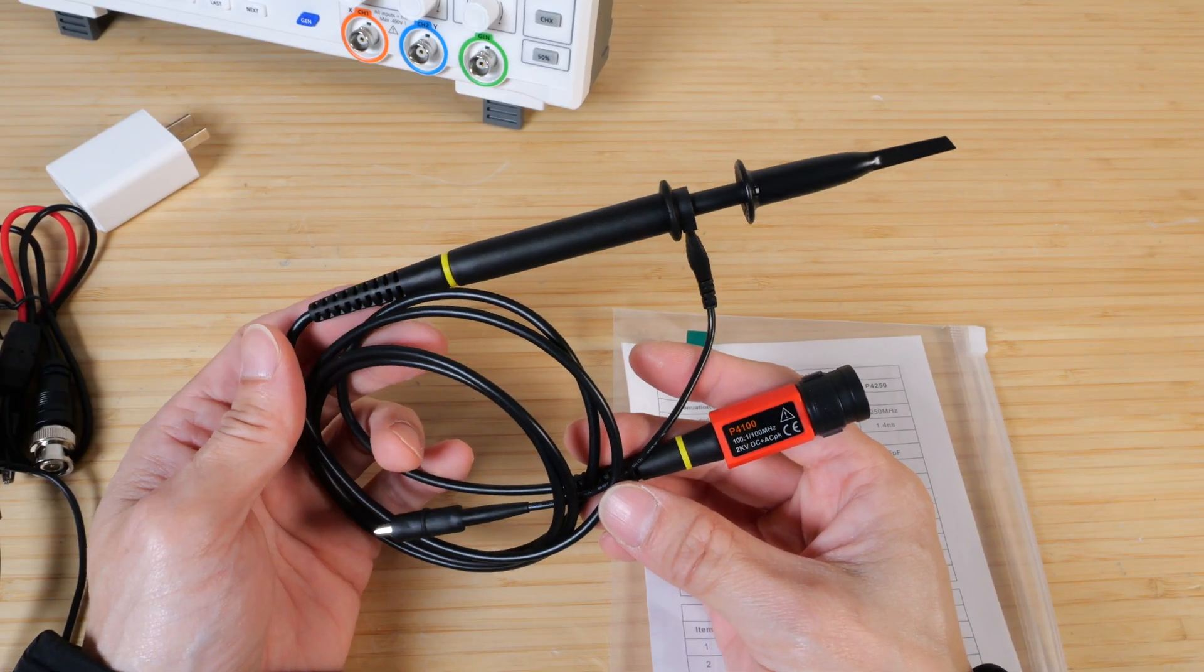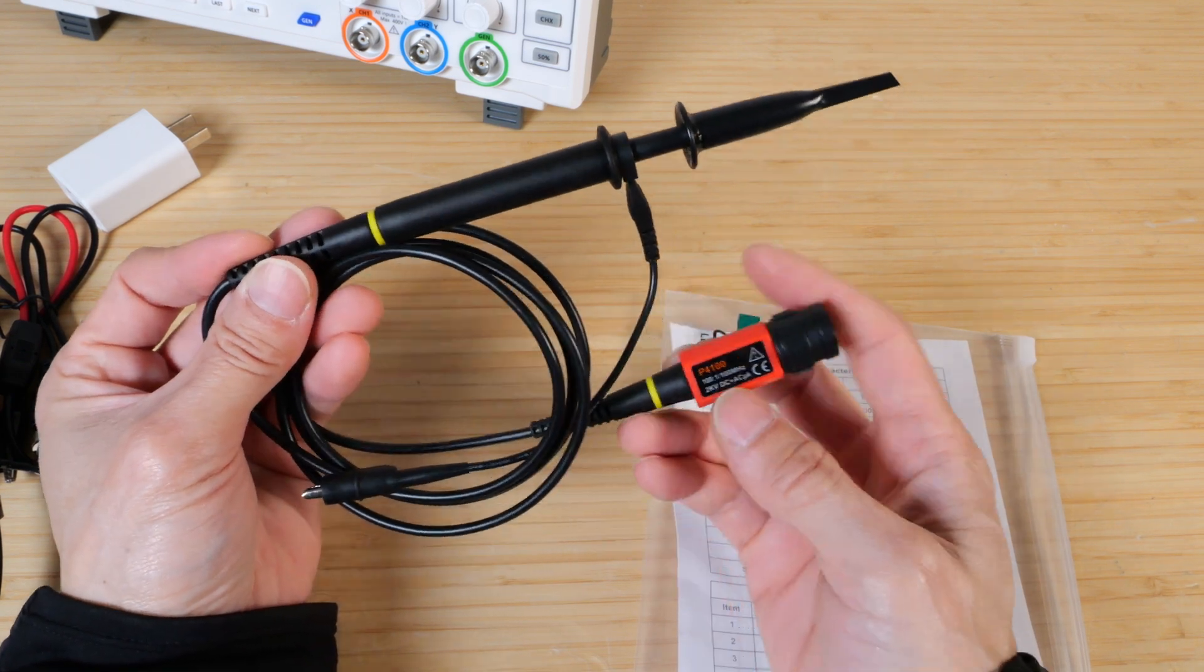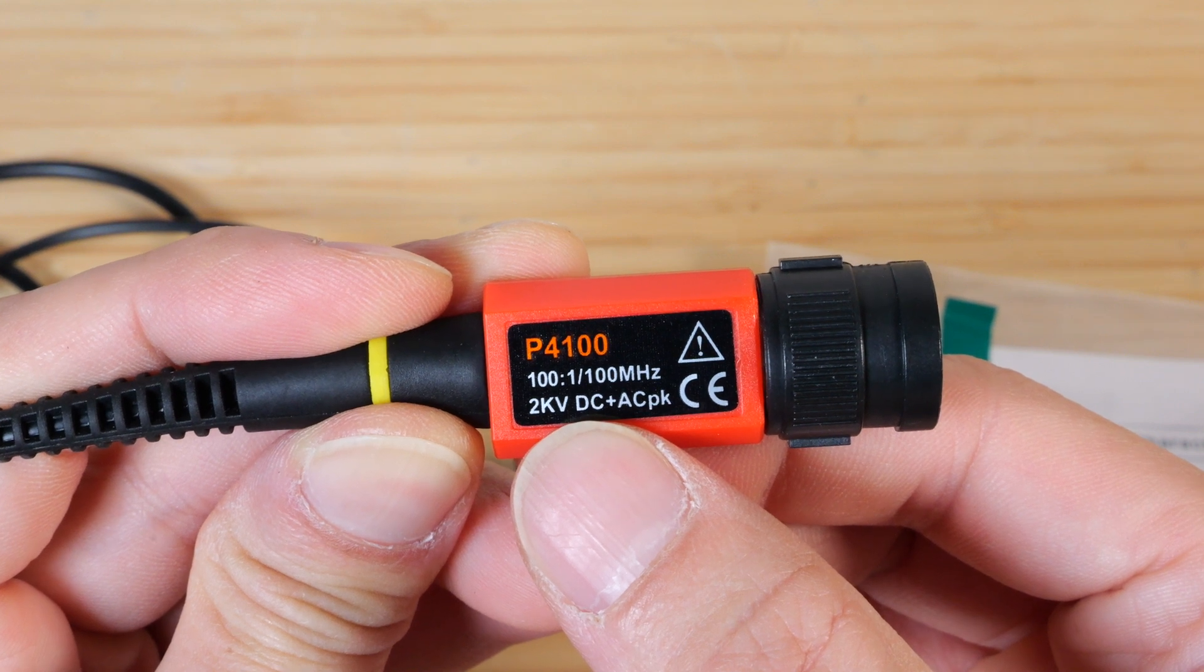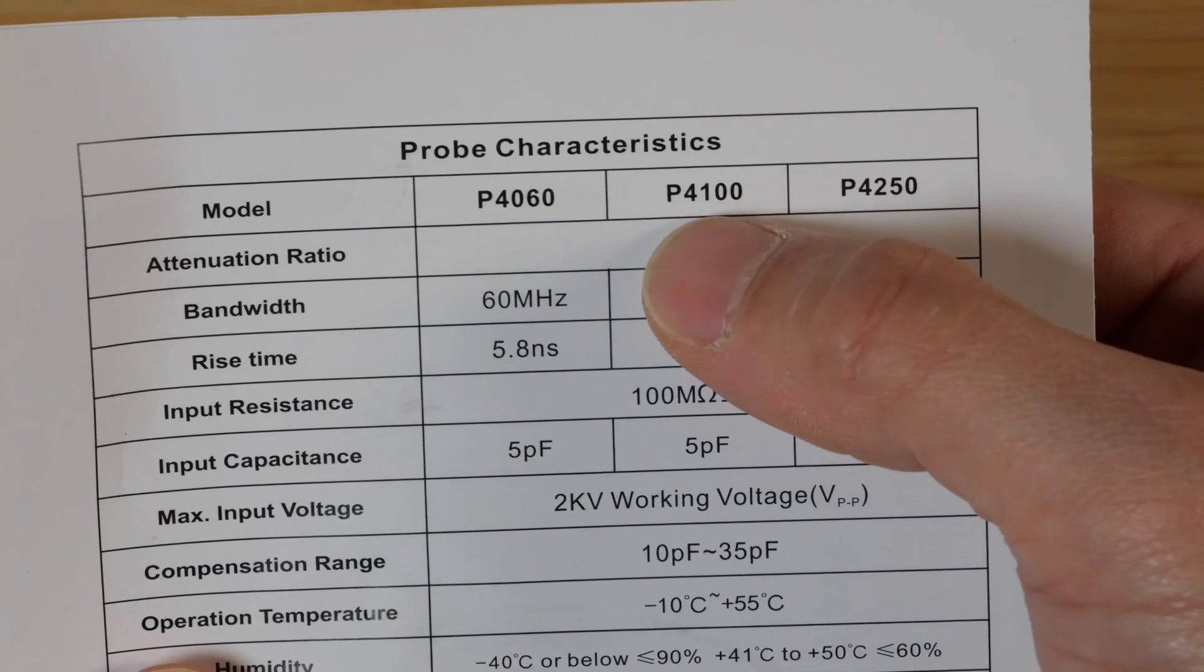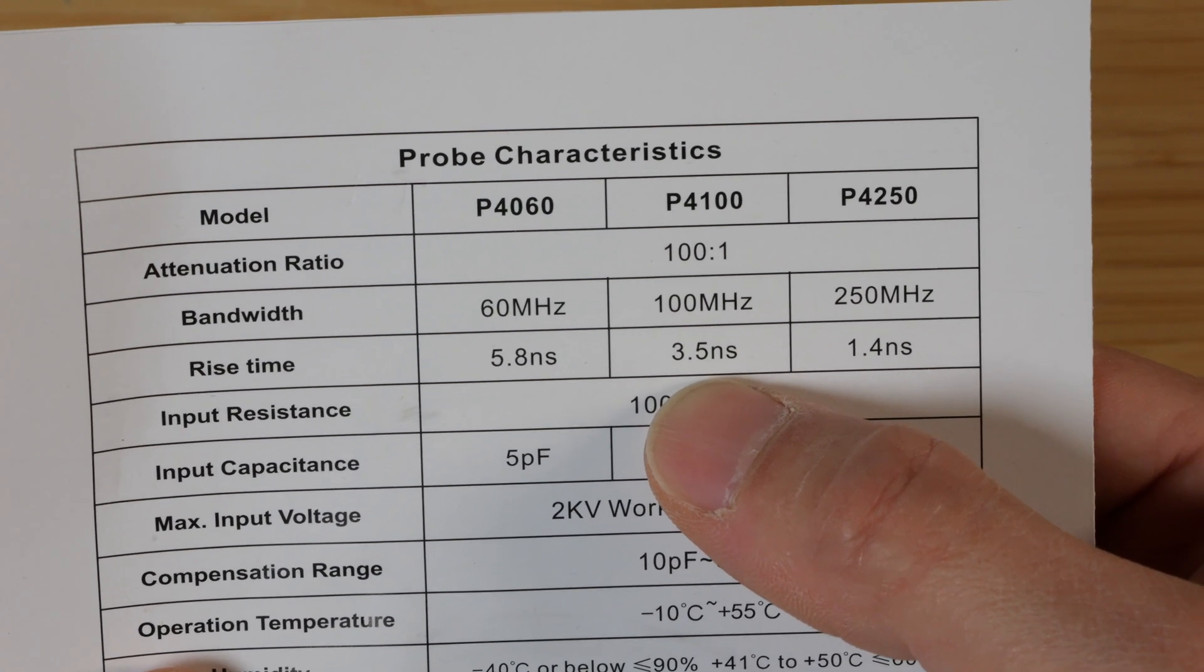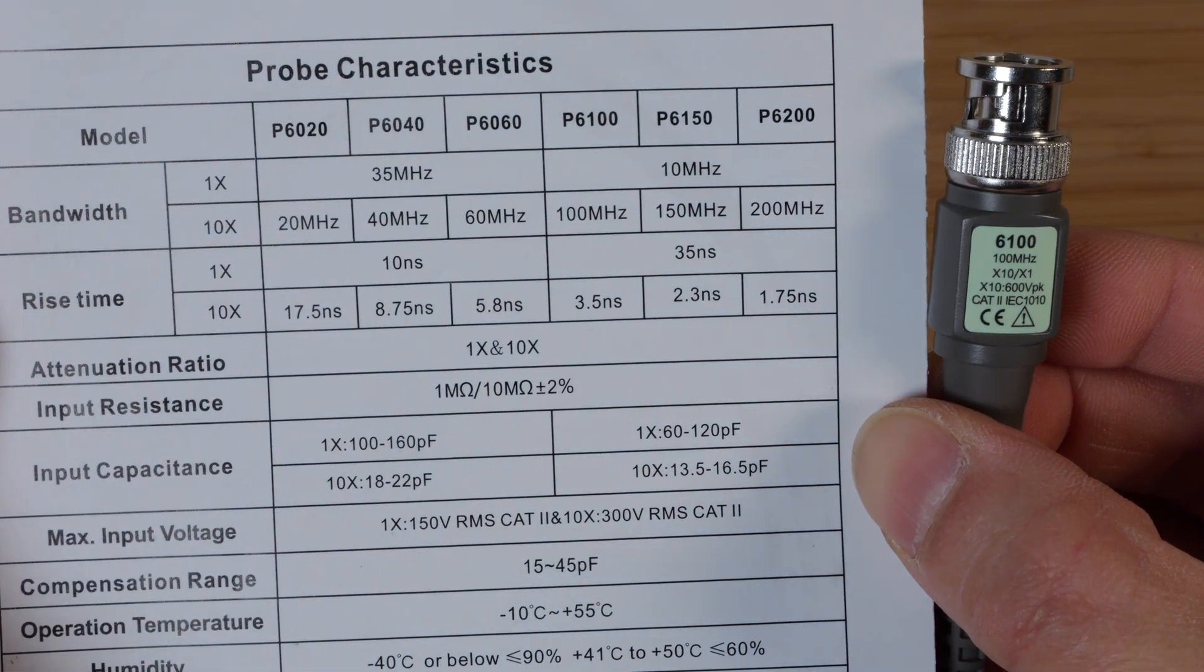This other probe that's 100 to 1, you can't actually switch the division ratio on this. It's always 100 to 1. It's a 100 megahertz probe that's capable of sensing up to 2 kilovolts. That's a lot. It's a P4100. It's capable of up to 3.5 nanosecond rise times. The 6100, it's also capable of 3.5 nanosecond rise times.